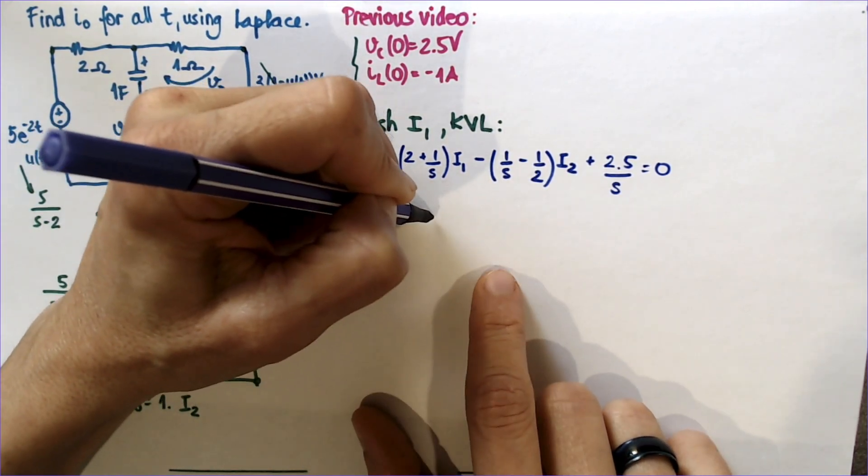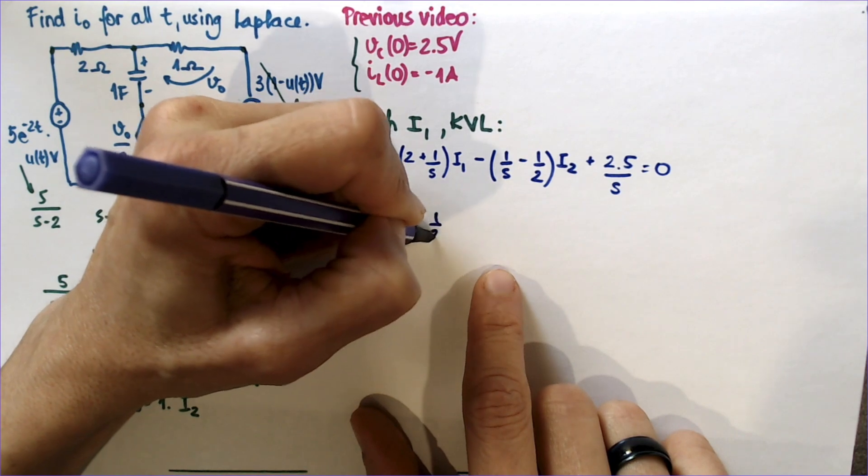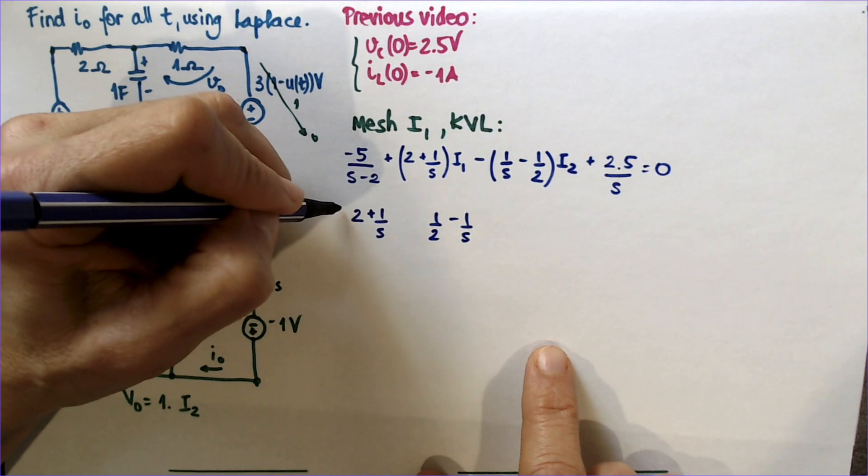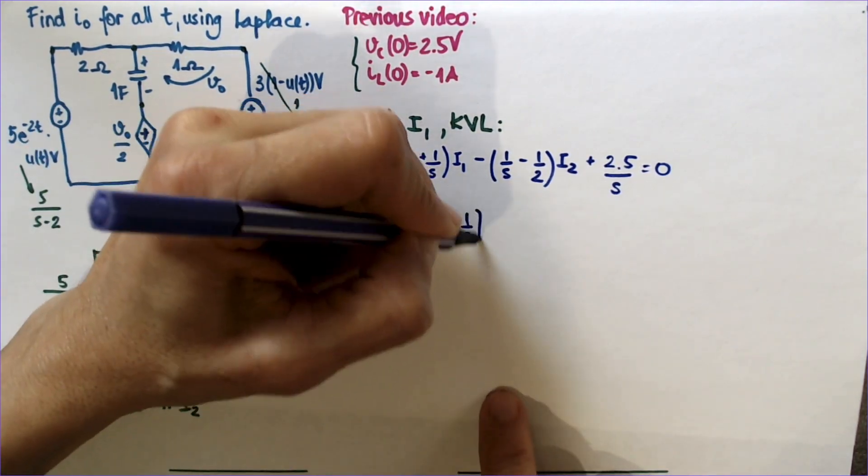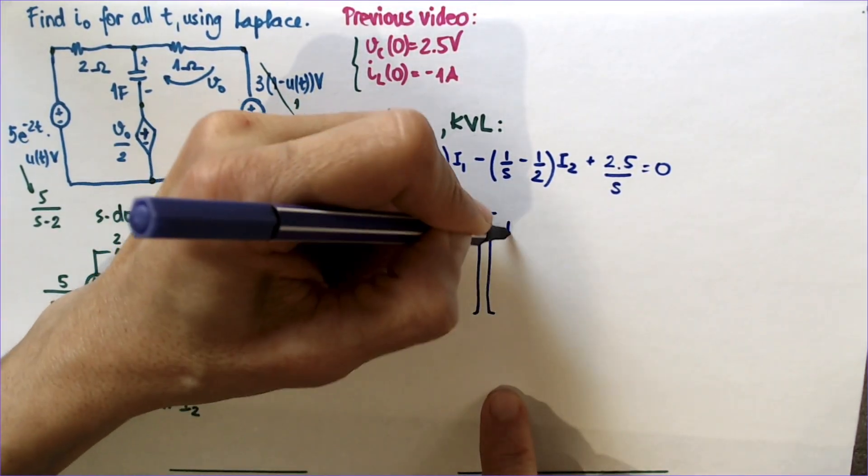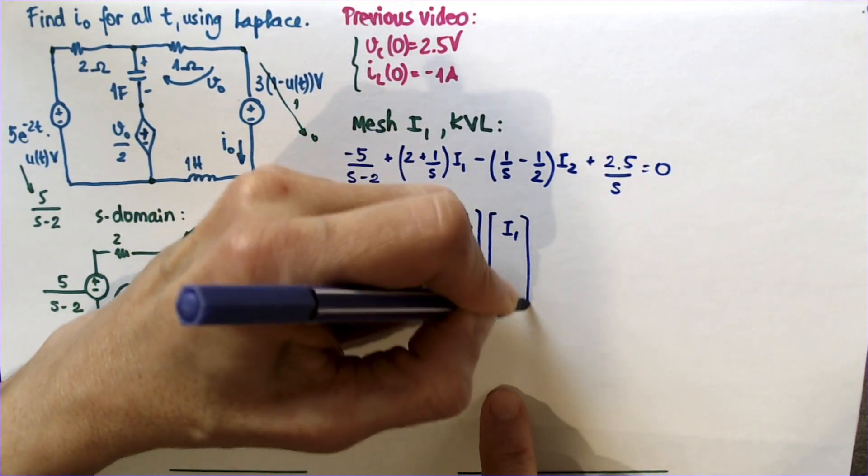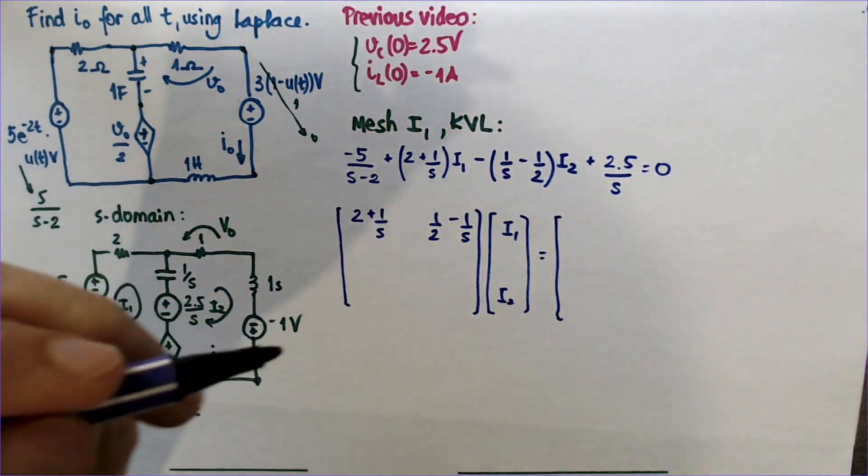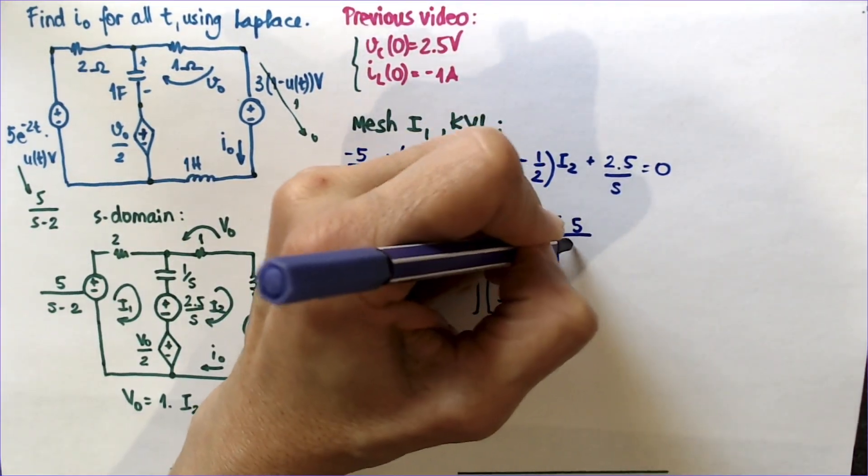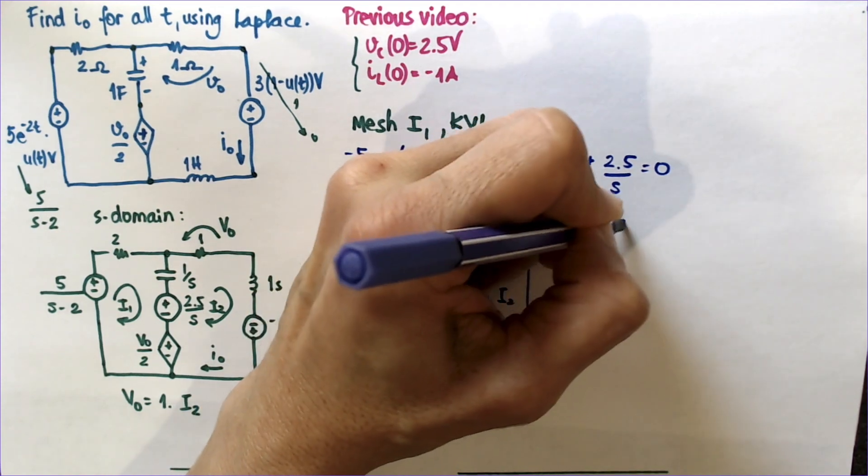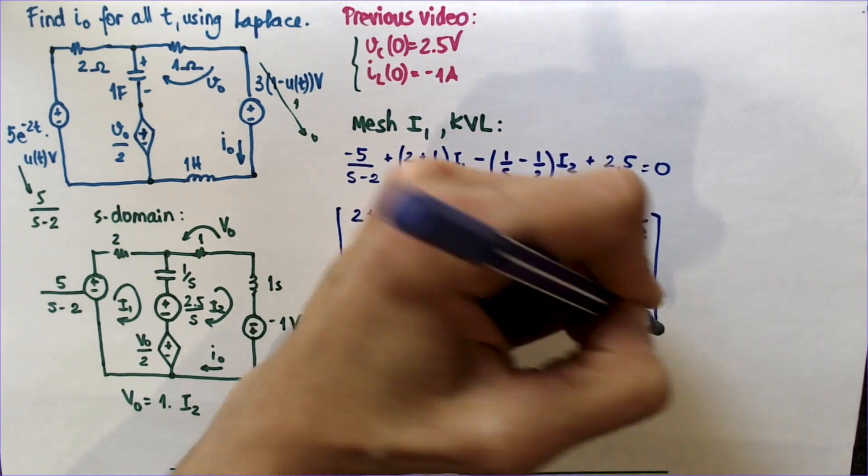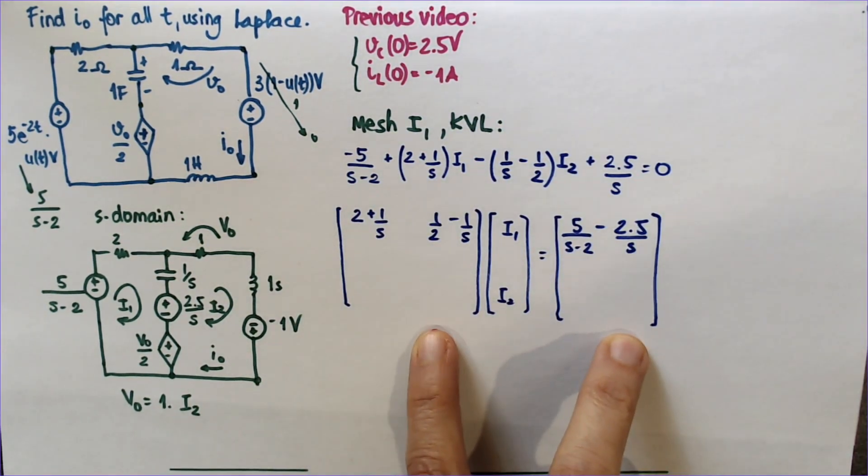And one thing I will ask you to do in the final exam is to make the system of equations. So it's going to be 2 plus 1 over s, this, and then half minus 1 over s, times I1, I2 equals 5 over s minus 2 minus 2.5 over s. And then here I'll have another number for the second mesh. So this is the kind of system of equation I would be grading you on.